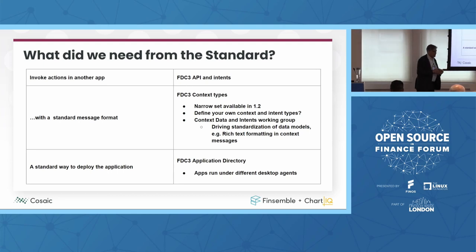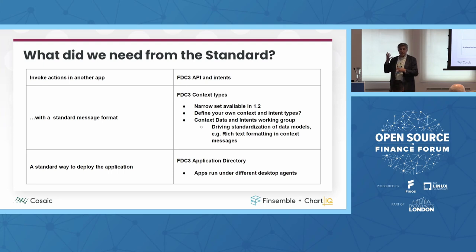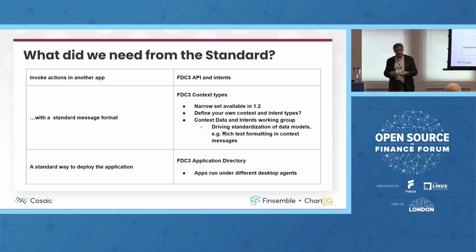We need a standard way to deploy these applications — the App Directory, as we call it. There should be multiple app directories where I can see all different applications and vendors. Each vendor would have an App D with all their child apps within it. Those need to be listed and discovered by the desktop agent automatically — it just plugs in, looks up, sees five app directories, pulls in all of those, and allows the user to access any of those apps.